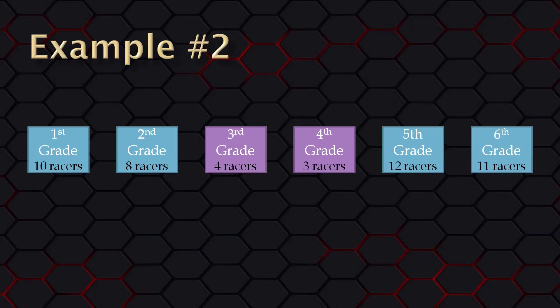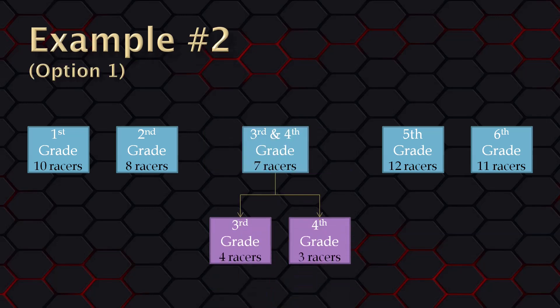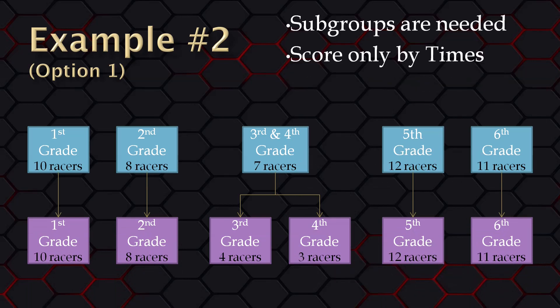In our second example, two of the grade levels don't have many racers. One option is to combine these two groups together, then create a subgroup for each of those grade levels. After racing is done, you can look at the subgroup standings to hand out awards for those grade levels. Note: when using subgroups, you will need to create at least one subgroup for every group. With this option, subgroups are needed, and since subgroups are being used, you can only score by times.